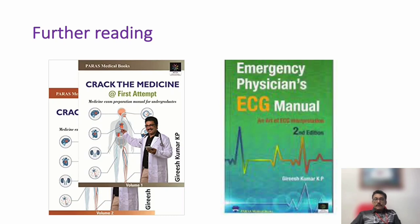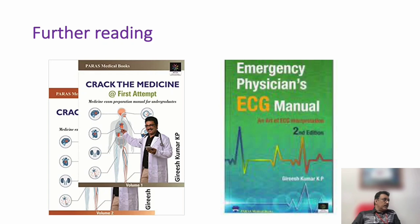In summary: Digoxin is a very useful drug in cardiac failure with atrial fibrillation, but it has a very narrow therapeutic index, especially in patients with renal failure. Patients on Digoxin who come to the emergency room with severe vomiting, abdominal pain, and nausea may show electrolyte imbalances such as hypokalemia, hyperkalemia, hypomagnesemia, hypocalcemia, or hypercalcemia. Correcting the electrolyte imbalance often resolves most problems. Some patients may require Digoxin antibody antidotes or dialysis. Thank you.